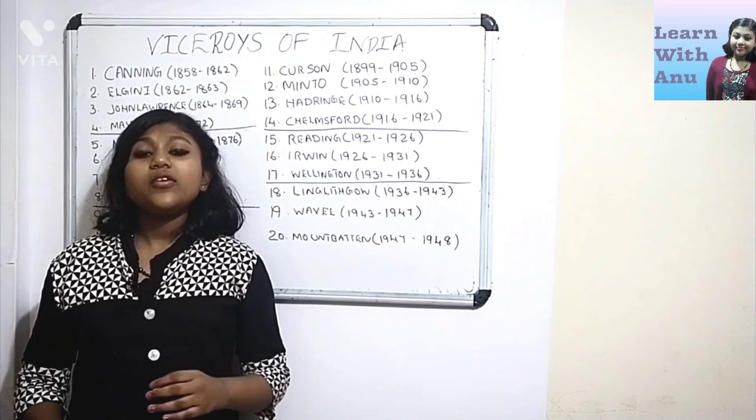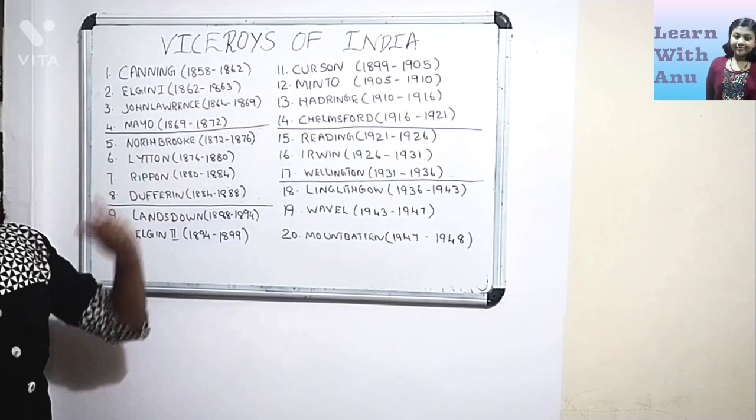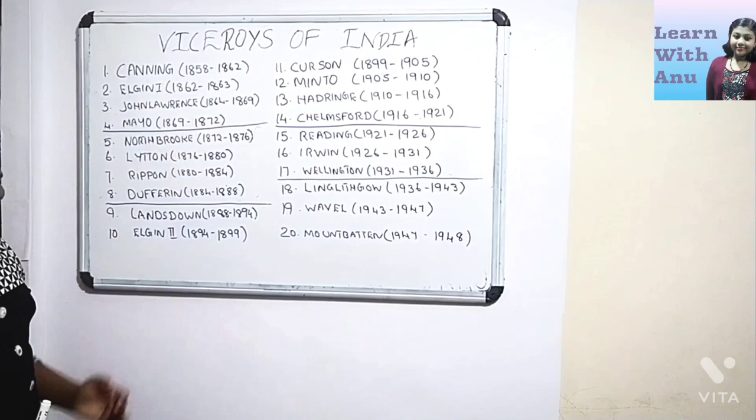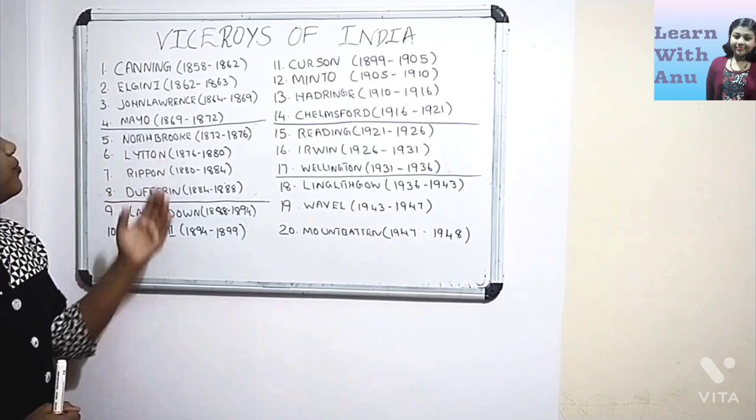Now let's have a quick recap of these Viceroys and their tenures of rule. The first Viceroy was Canning, who ruled from 1858 to 1862. Then second, Elgin the first ruled from 1862 to 1863. Then John Lawrence 1864 to 1869. And Mayo 1869 to 1872.